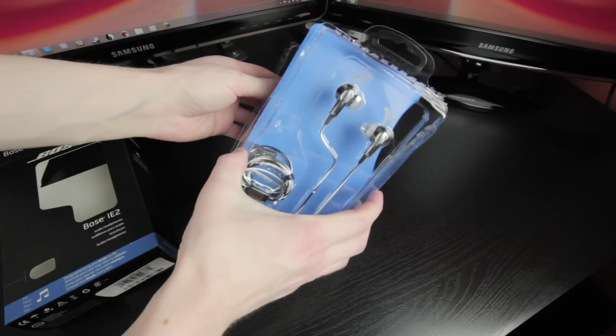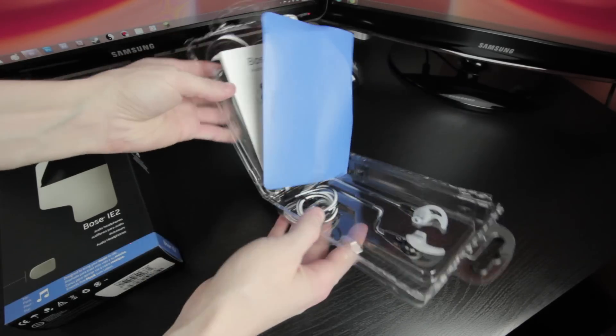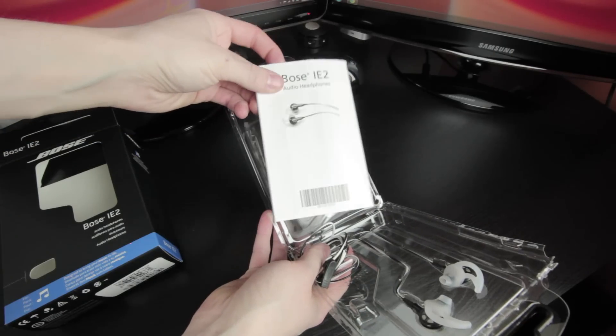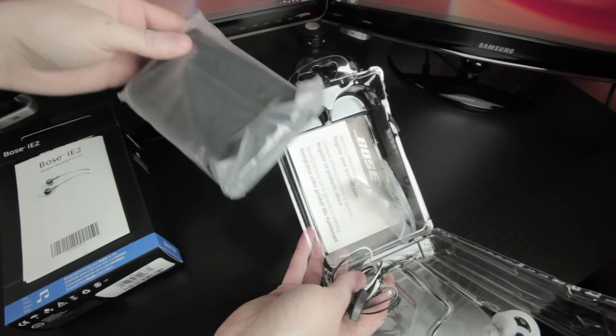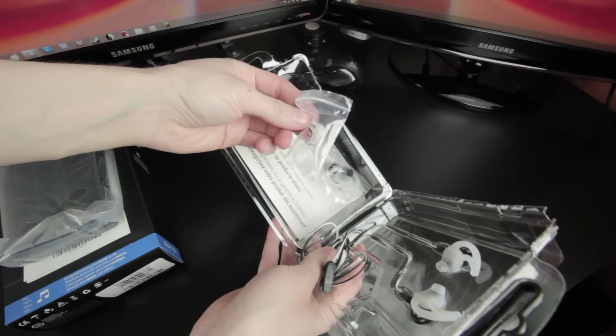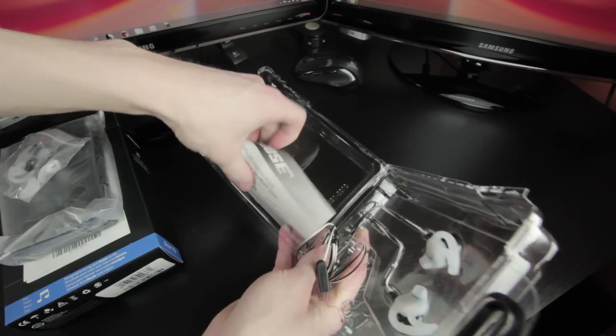The first item inside the plastic coffin is the Bose IE2 headphones instruction packet and black leather carrying case that holds these headphones and keeps them nice and protected. Underneath that comes some different sized earbuds with the curved tips and then some standard warranty information.